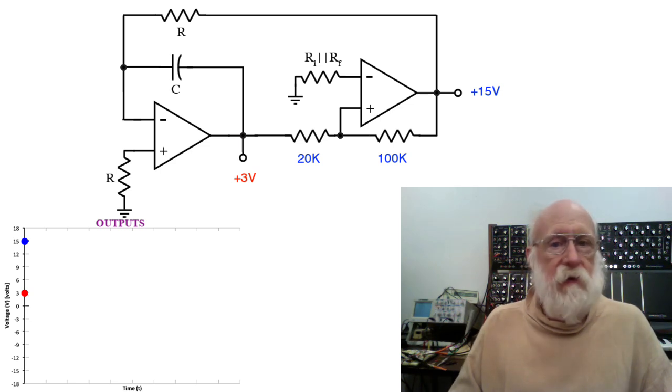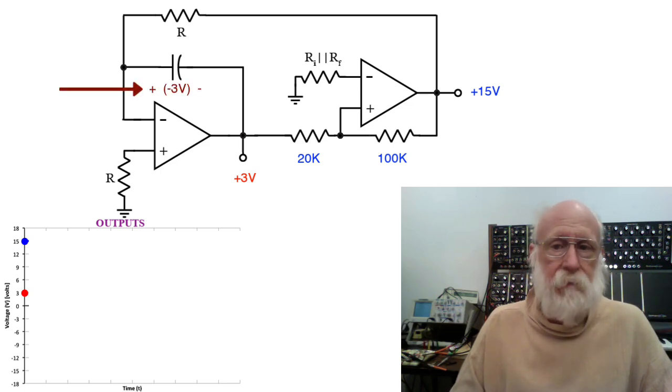Since V sub T is plus 3 volts, that means the voltage across the capacitor in the integrator is minus 3 volts. So now let's see what happens from this point.